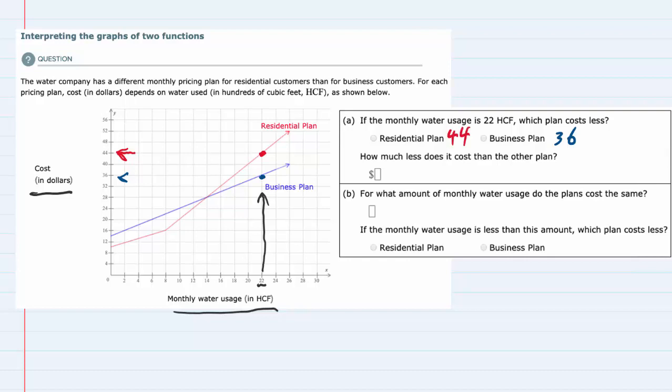So for the first question, which plan costs less, that would be the business plan, the blue one, which is lower. The second part asks how much less does it cost than the other plan. The other plan is $44, the business plan is $36. If we subtract those to find how much less, $44 minus $36 is $8. So the business plan is $8 less.